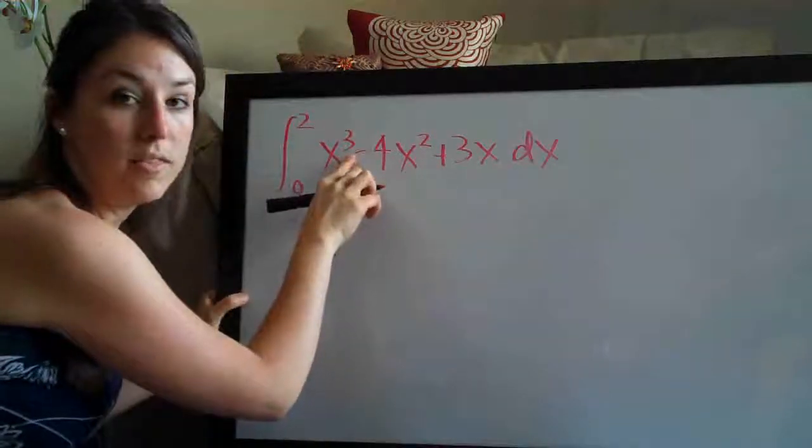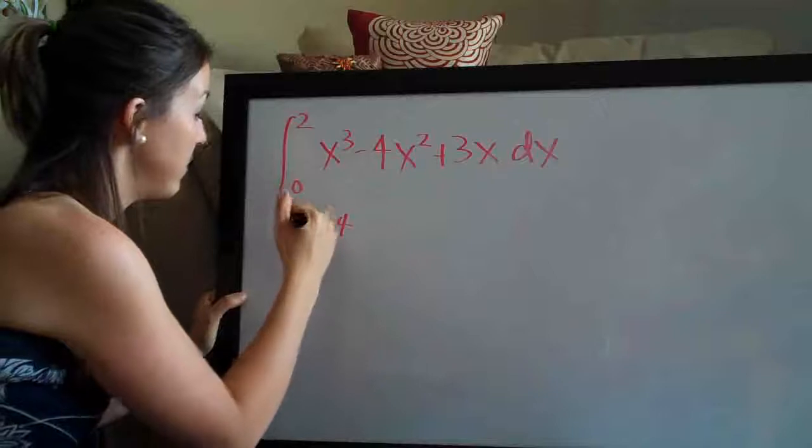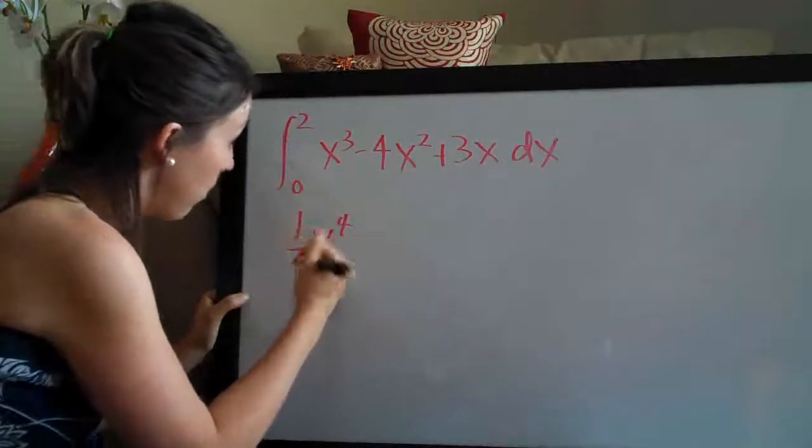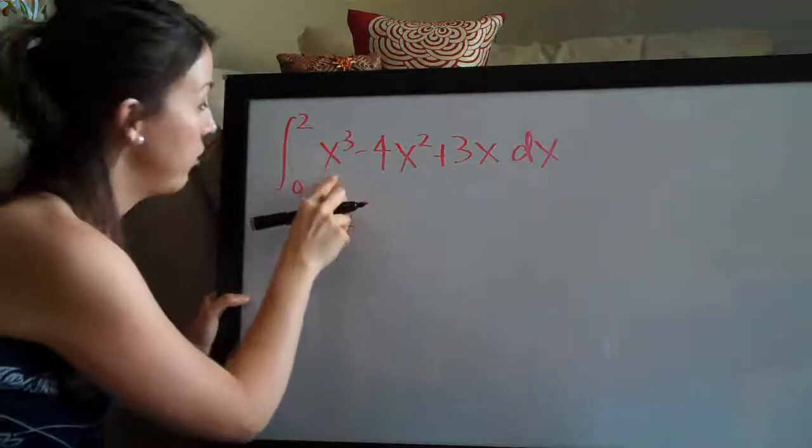We're going to add 1 to the exponent so 3 plus 1 is 4, and then we divide the coefficient which is an implied 1 by the new exponent, 4. So 1 fourth x to the fourth is the integral of x cubed here.